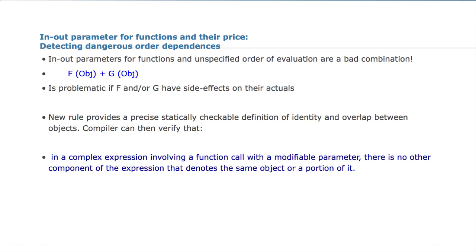The language now, when we have expressions of this kind, specifies rules that make this safe by saying the compiler must check that there is no overlap between objects that could be modified. There is a very precise description of what overlap might mean — one record and one component of that record, one component of an array and another component of the array, and so on. Whenever there is the danger that in an expression there are several function calls with side effects that might have overlapping parameters, the compiler is supposed to reject this.